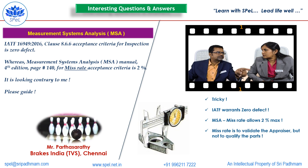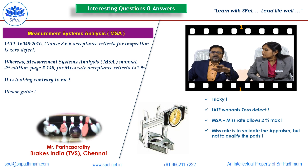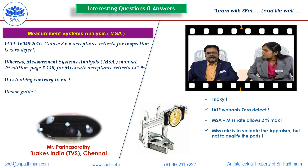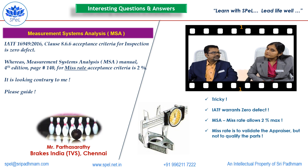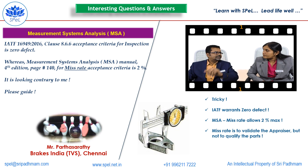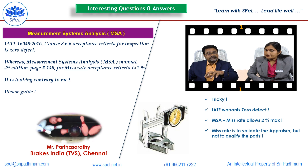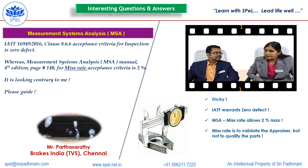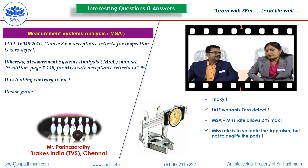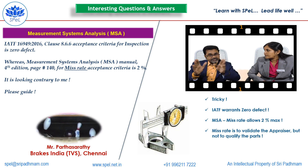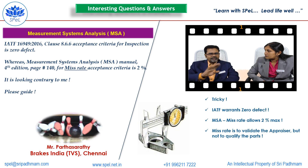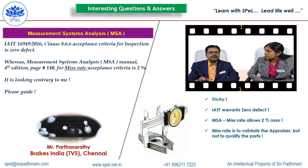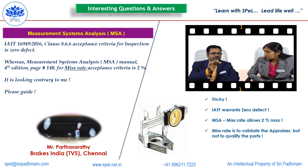Kindly understand: miss rate is not the acceptance criteria for the bad parts or for the parts being inspected. Miss rate is only a kind of allowance given for the validation of the appraiser. This should not be confused with acceptance criteria for the parts being inspected. So these are two different things — we should not mix them up. 2% is allowed as miss rate only to validate that particular appraiser.